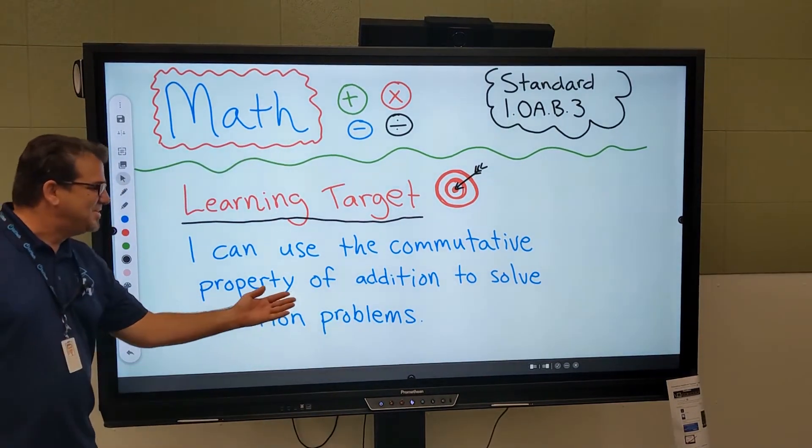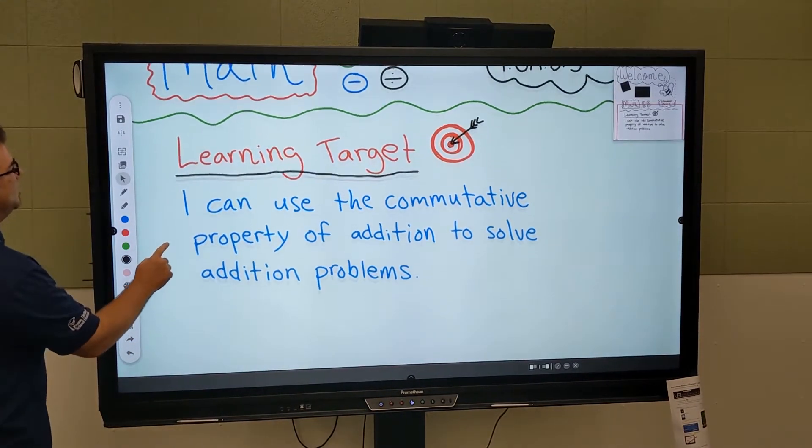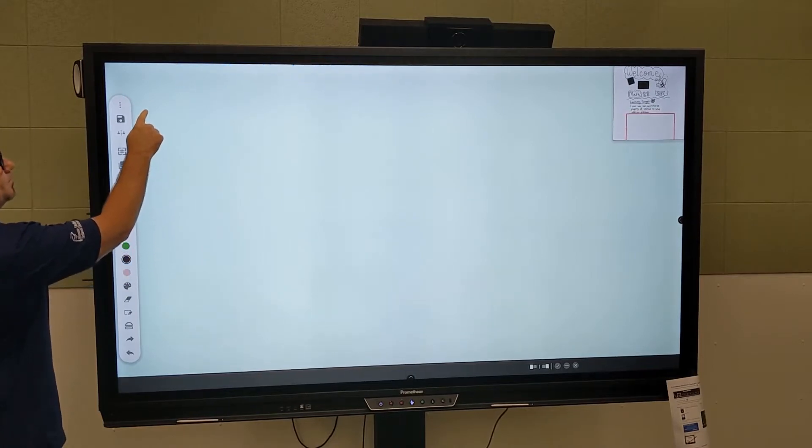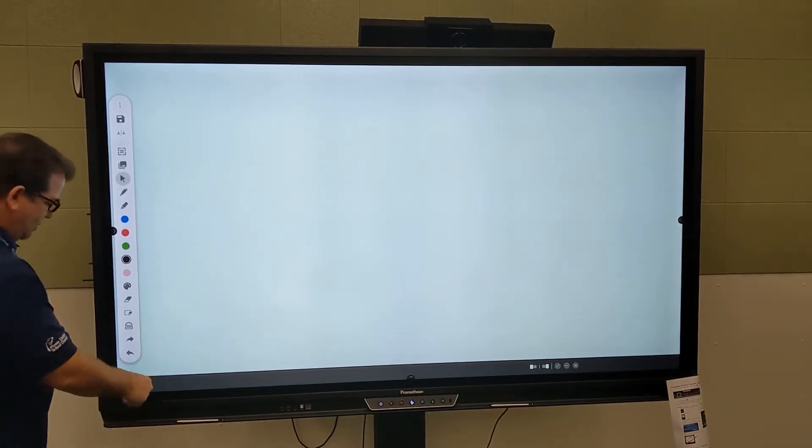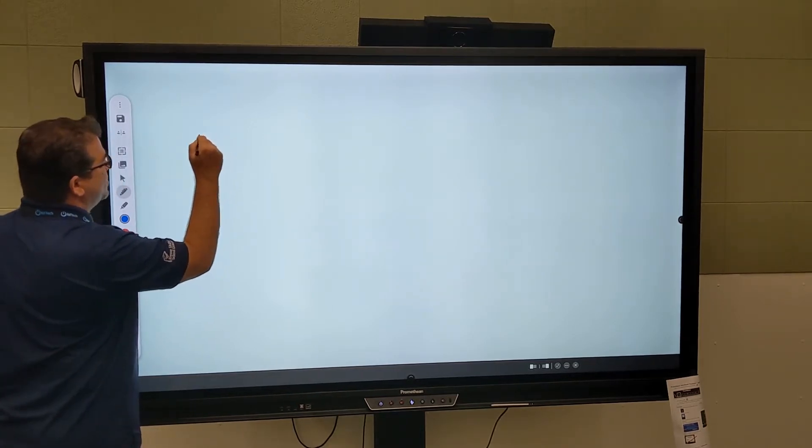So here we go. Let's solve some addition problems. All right, first we're gonna put our first number on the board, which is the number seven. You gotta love lucky seven.